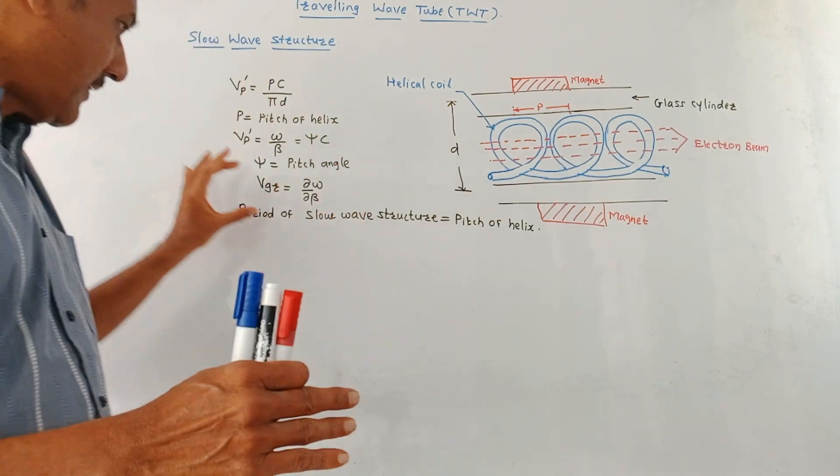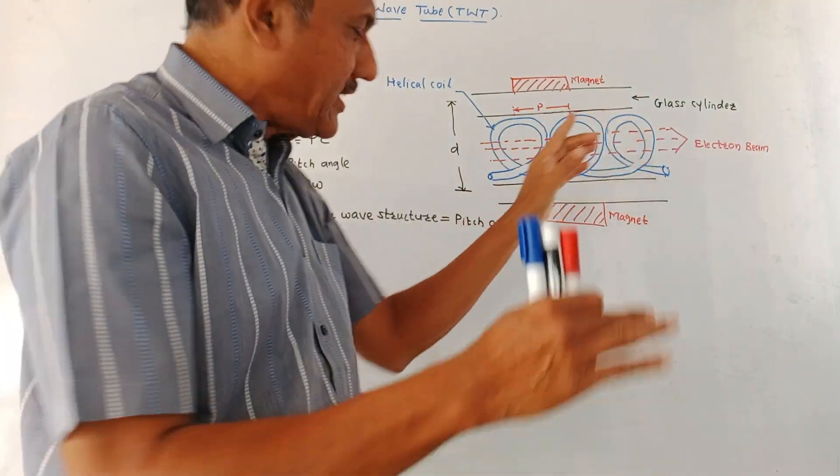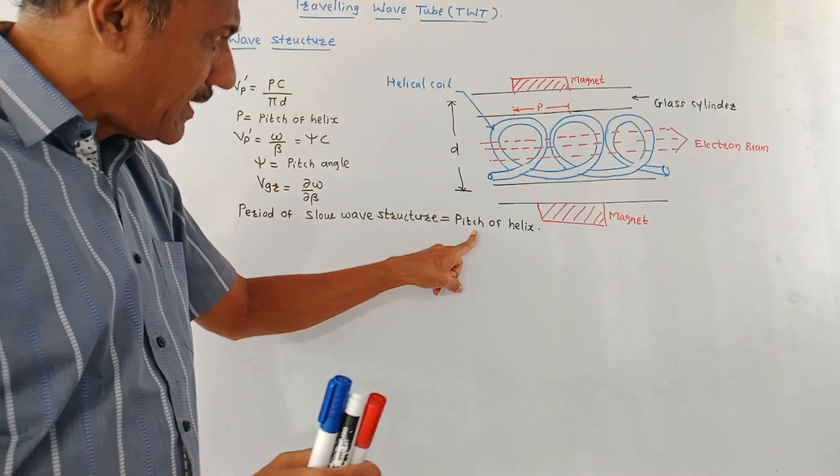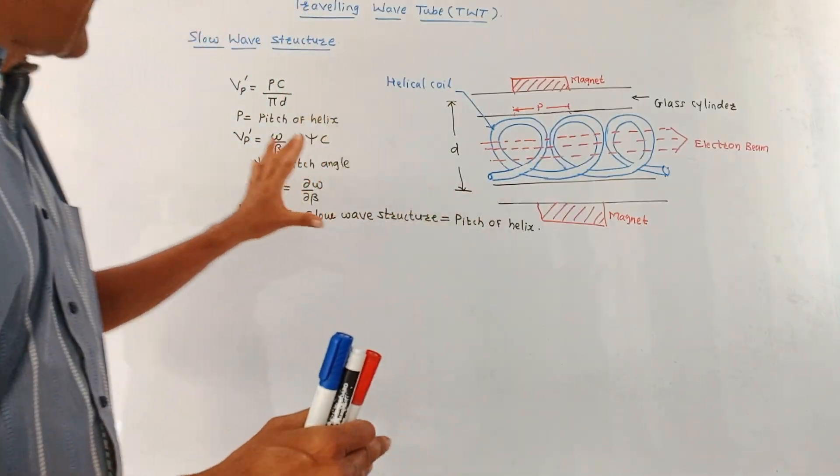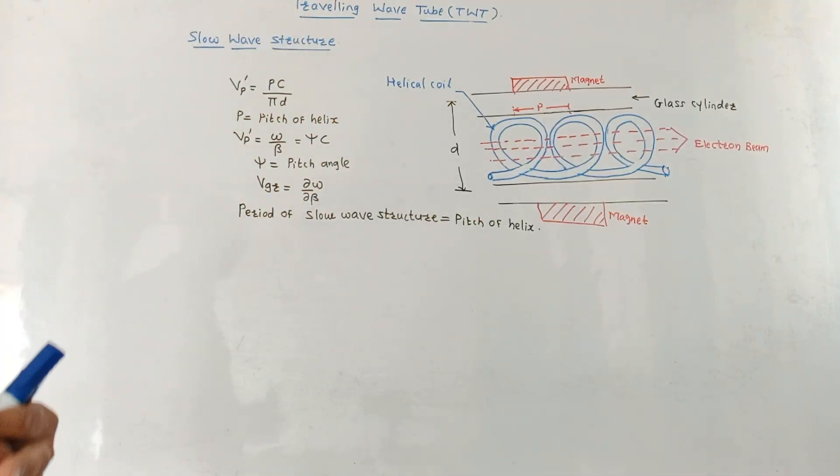Now the different groups are traveling with a certain velocity which is called a group velocity. The formula to calculate group velocity is d omega by d beta. Beta is the phase shift, omega is angular frequency. What important concept is that the period of slow wave structure, this helical structure, should be equal to the pitch of the helix. So this is about the slow wave structure which is used in traveling wave tube.